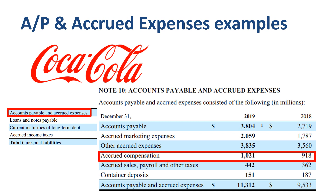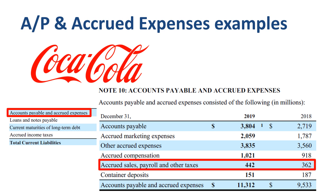Next, accrued compensation. These are liabilities of salary and wages that are earned by the employees or the company's management, but are not paid or payable yet. And the last material one to highlight: accrued sales, payroll, and other taxes — specific types of taxes due within the next 12 months.